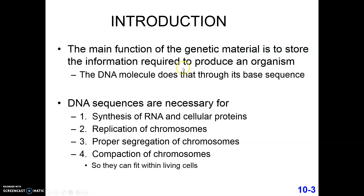Let's take a look at some of the sequences that occur in our chromosome. First, we have those regions of DNA that produce the synthesis of RNA and cellular proteins. This RNA could be transfer RNAs or the RNA found in ribosomes, which we refer to as rRNA. There are also several other types of RNAs with different jobs. We're also talking about all of the sequences that encode for messenger RNAs, which then lead to all of these cellular proteins.